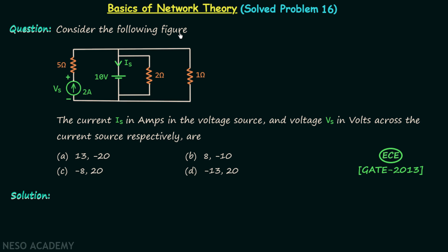Consider the following figure. This is the figure given in the question. The current Is in amps in the voltage source and voltage Vs in volts across the current source respectively are.